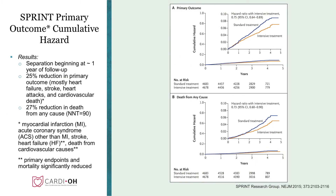This slide gives the results of the SPRINT trial. The trial was stopped early by the Data Safety and Monitoring Board. Originally designed to run five years, it was stopped due to a 25% reduction in the primary outcome, which included heart attack, stroke, heart failure, cardiovascular death, or acute coronary syndrome. There was a 25% lower risk of these outcomes in those randomized to the less than 120 target compared to less than 140. Even more impressively, there was a 27% lower risk of death from any cause in those randomized to less than 120 compared to those randomized to less than 140.